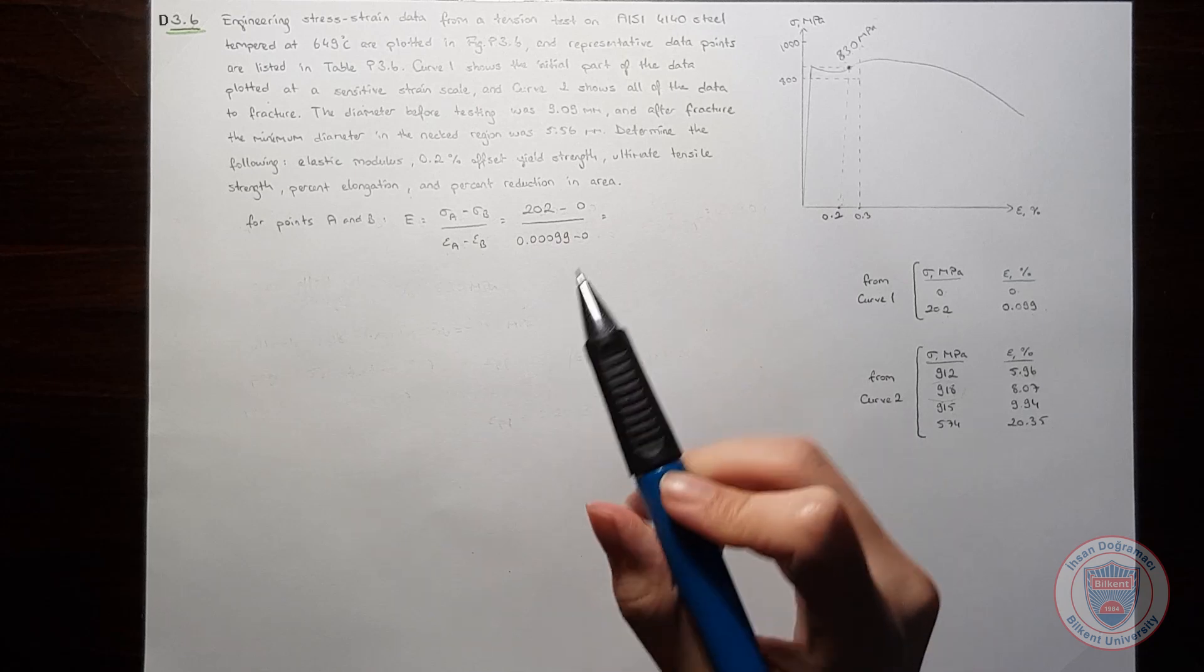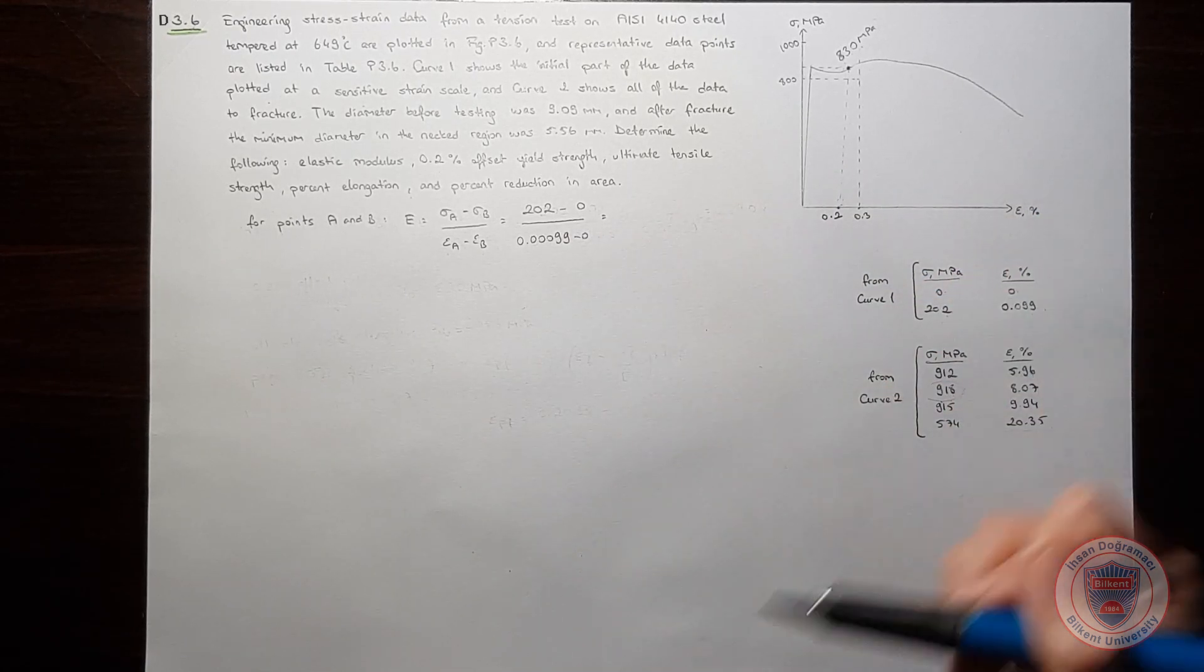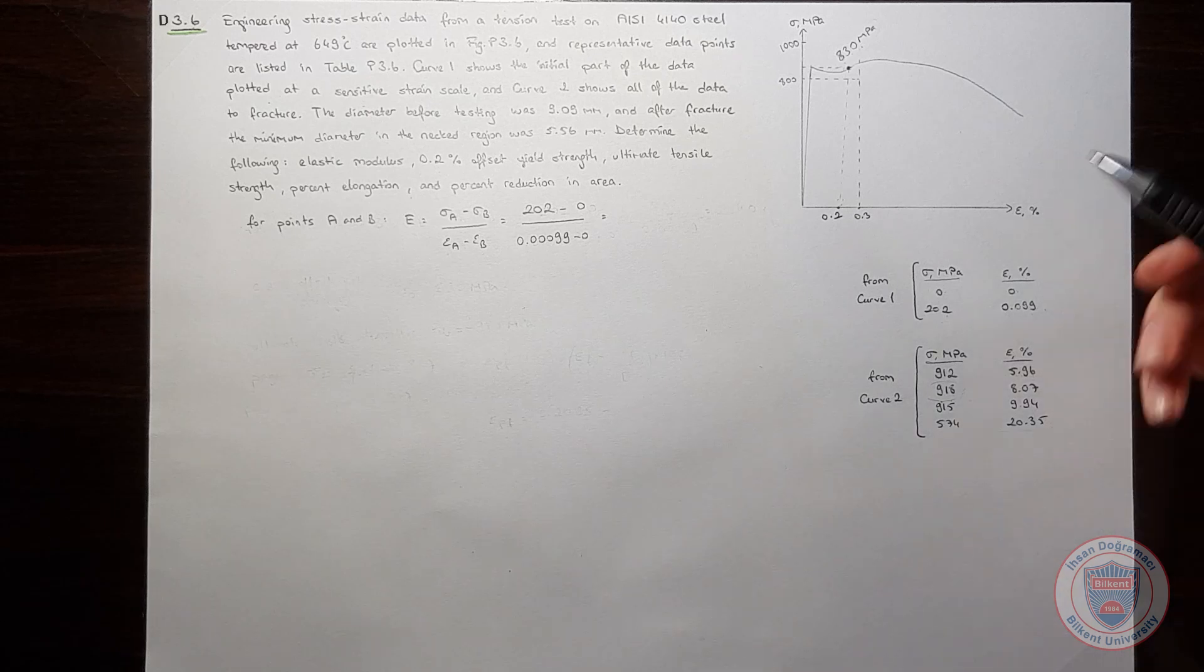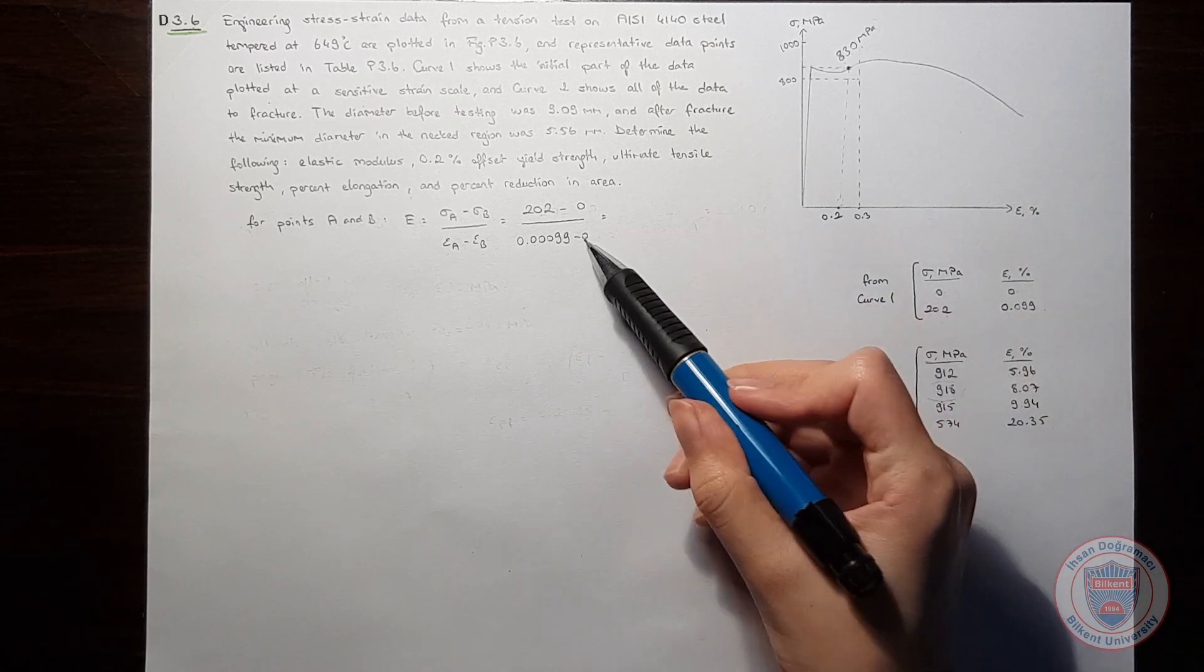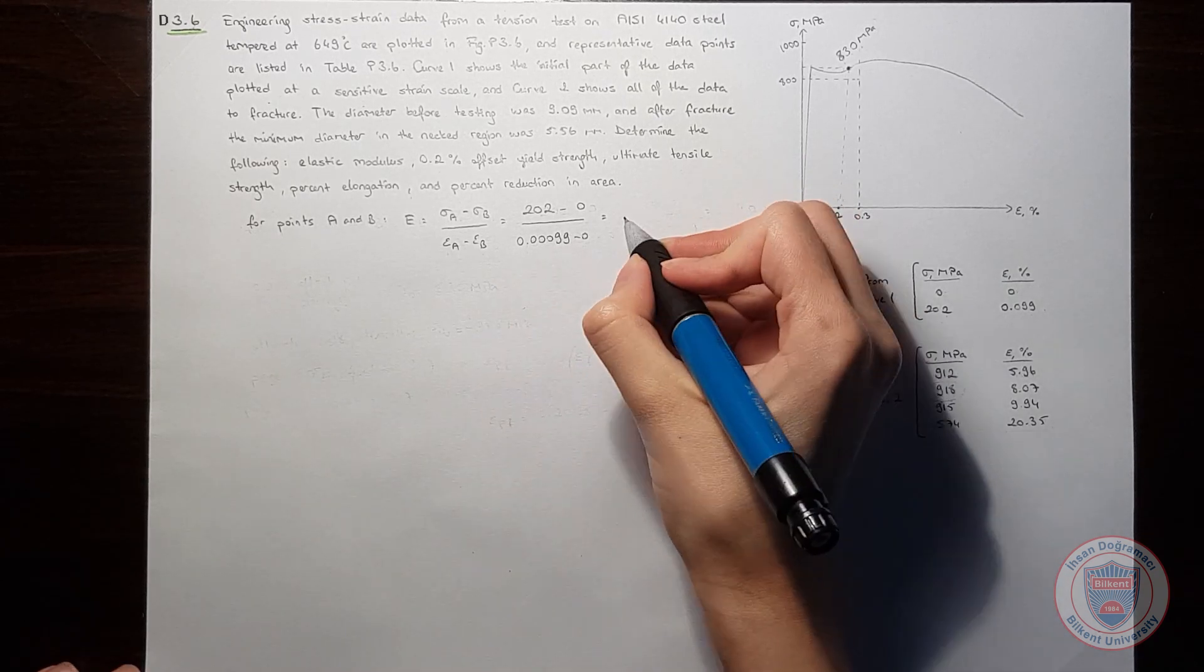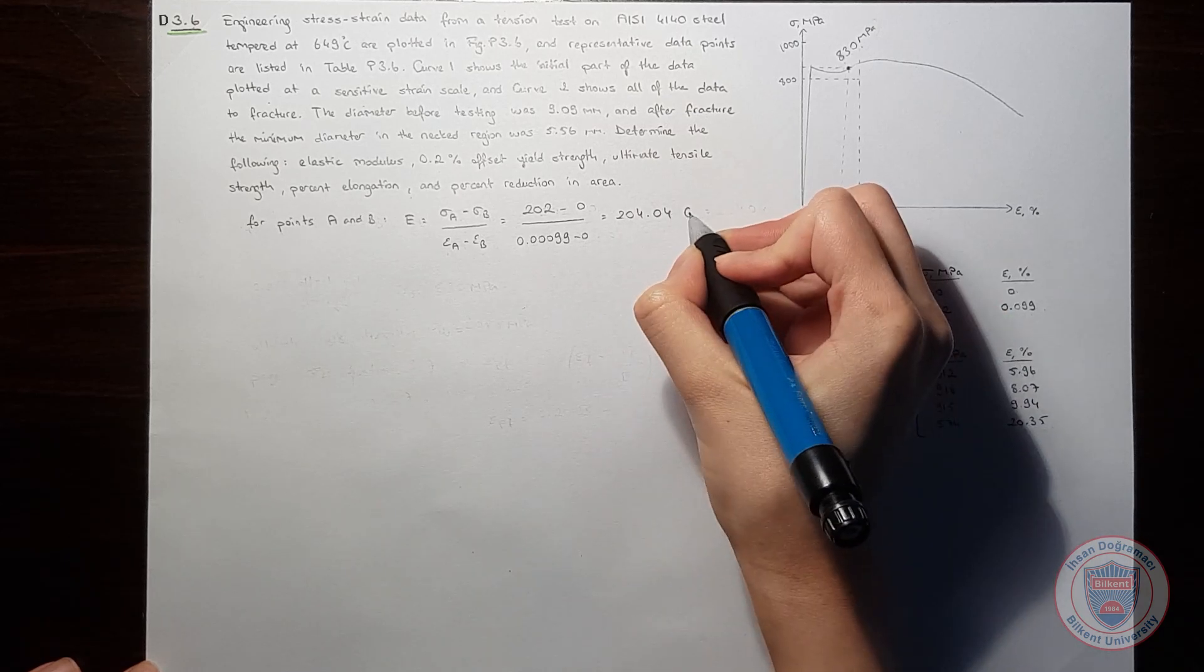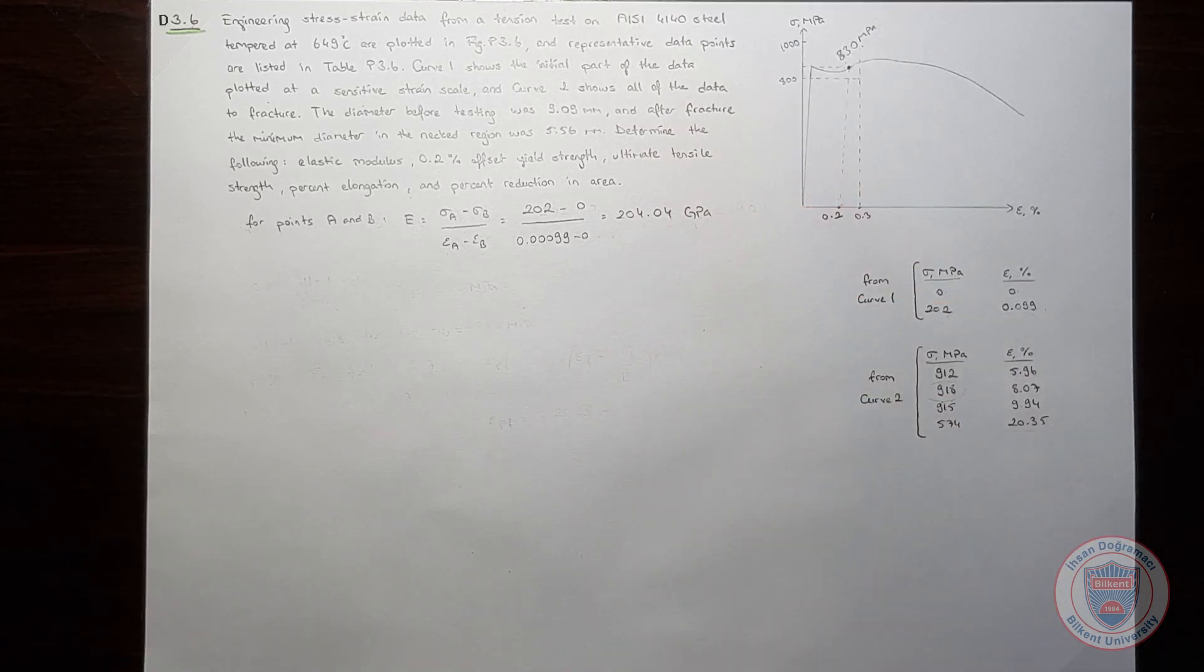In real life, this curve usually doesn't start from 0 to 0, but since we are given this data, we can use these points to calculate Young's modulus. So when we calculate this, we get a Young's modulus of 204.04 GPa. So we are done with elastic modulus.